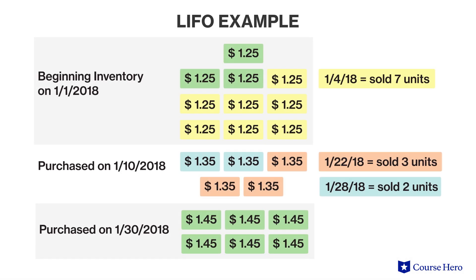The LIFO method of inventory valuation is in some respects the opposite of FIFO. With LIFO, the units purchased most recently will be deemed to be sold first. Assume company ABC is using a perpetual inventory system and a LIFO inventory valuation method. Its beginning inventory includes 10 units, and goods are purchased and sold throughout January. For the first sale of seven units on January 4th, all seven units come from the 10 items in beginning inventory at $1.25 per unit, since the January 10th and January 30th purchases had not yet occurred. Therefore, the beginning inventory units were still the most recently purchased units.